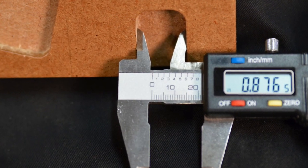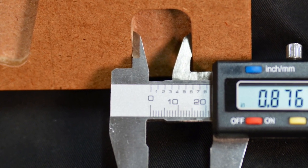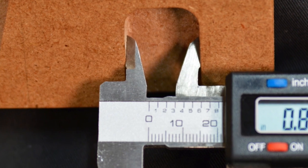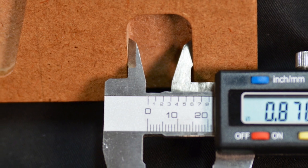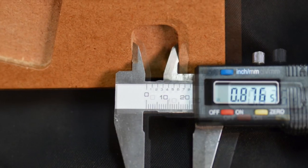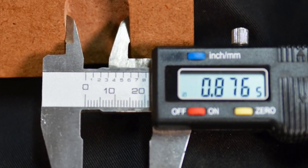To make an internal measurement, slide the jaws closed and place the inside measurement jaws inside the item to measure. Slide the jaws open until they gently contact the item. Read the measurement on the LCD screen.